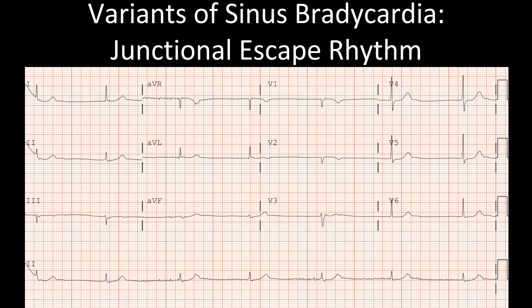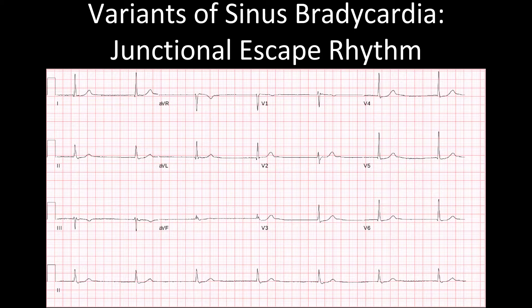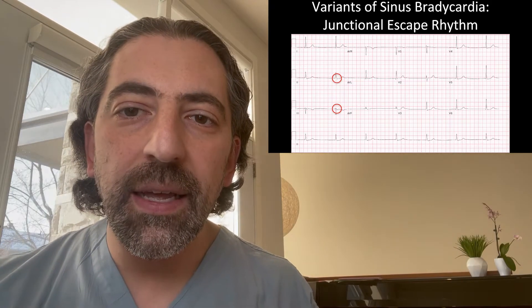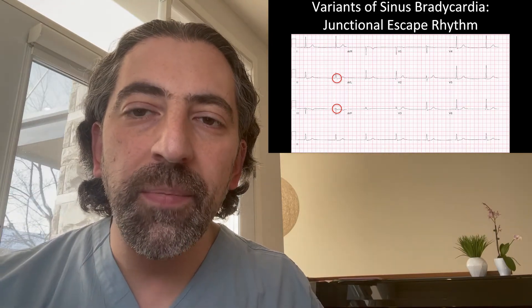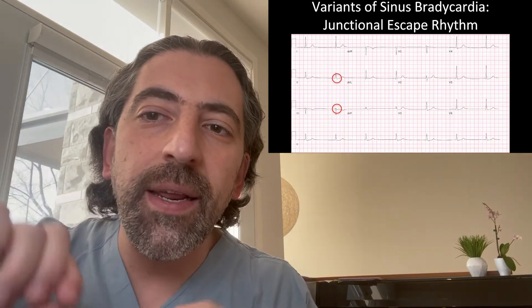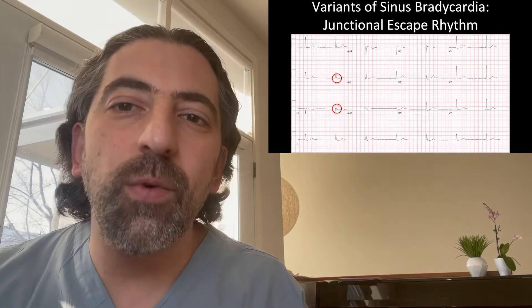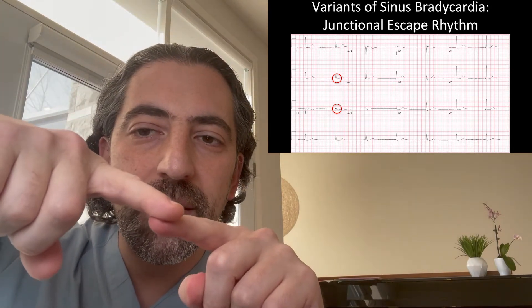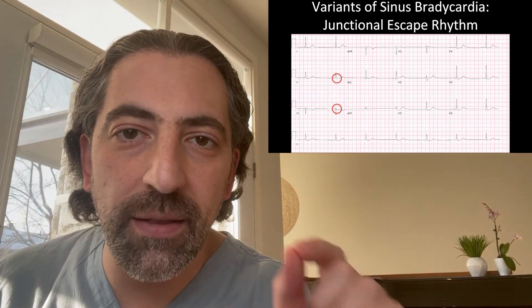Sometimes, instead of another part of the atrium taking over, the AV node will take over, giving you a regular escape without a preceding P-wave. This is called a junctional escape rhythm. Here's an example of a junctional escape rhythm where you see the absence of P-waves preceding the QRS complex. In another example, you actually see the P-wave overlapping or slightly after the QRS complex. What's happening is that the AV node leads depolarization, conducting down the ventricles to generate a QRS and conducting up the atria to generate a negative P-wave. So the P-wave and QRS are generated at the same time because depolarization is initiated at the AV node.